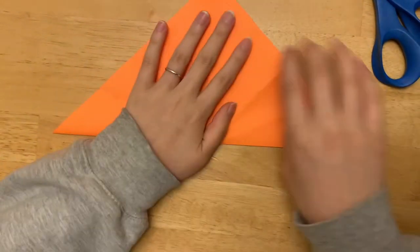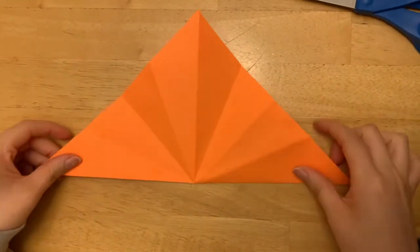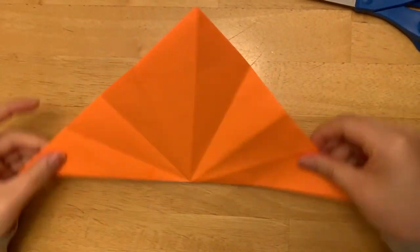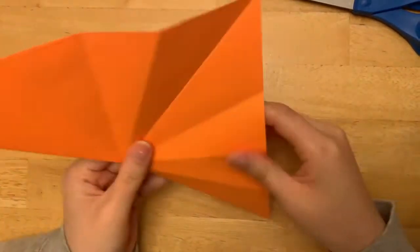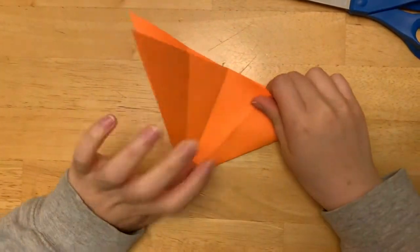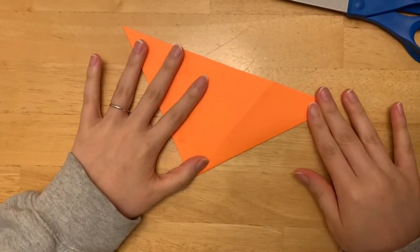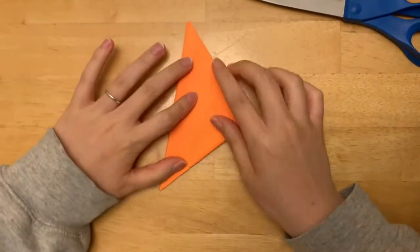So first, what we're gonna do is fold the piece of paper in half into a triangle. Then I want you to fold again.